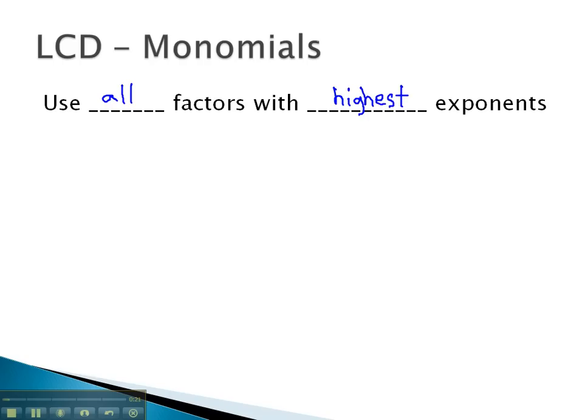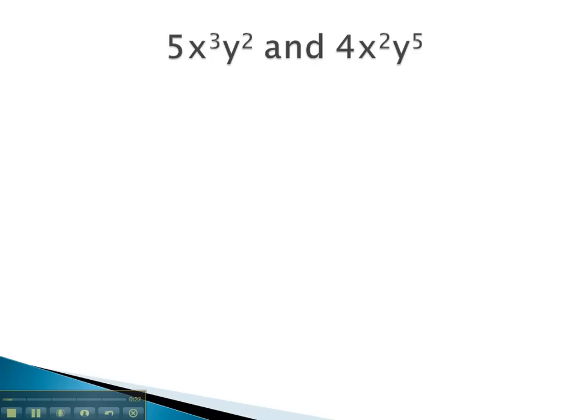Let's take a look at some examples of monomials where we can find all the factors with highest exponents. In this problem, you notice we've got the numbers 5 and 4. You can tell quickly that 5 and 4 have a common denominator between them of 20.